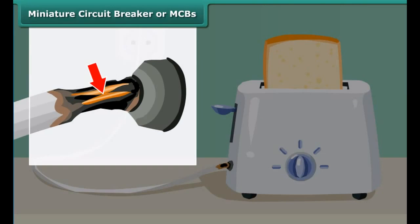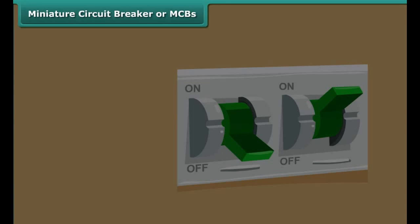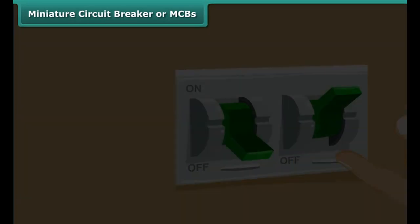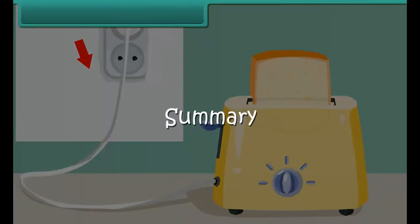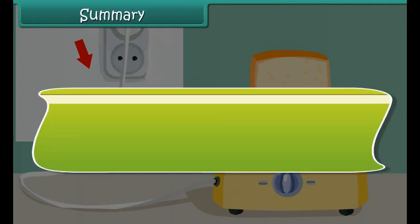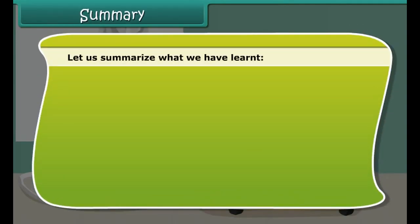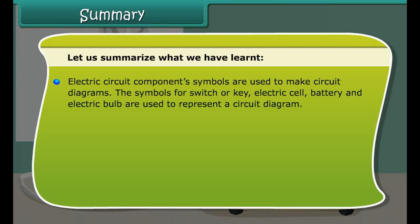A cartridge fuse is generally used in electrical appliances. A miniature circuit breaker (MCB) is an automatically operated electrical switch designed to protect an electrical circuit from damage caused by overload or short circuit. Whenever there is a fault in a circuit, the MCB interrupts continuity to discontinue electrical flow immediately. It can be reset to resume normal operation.